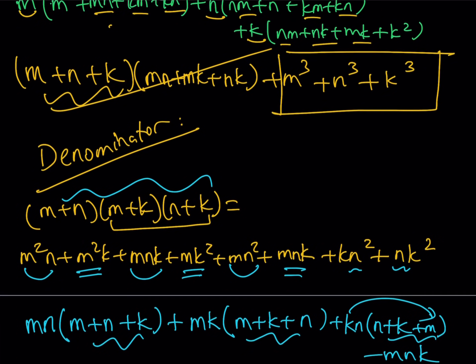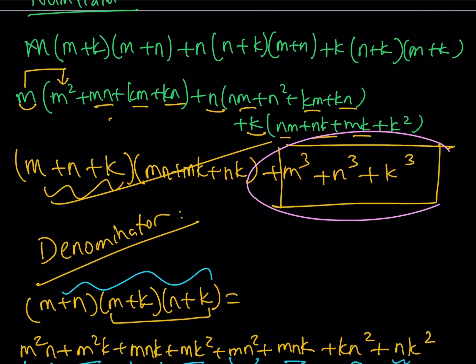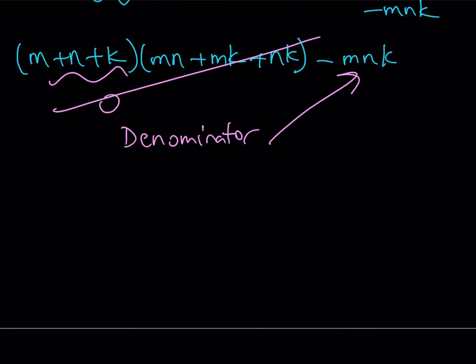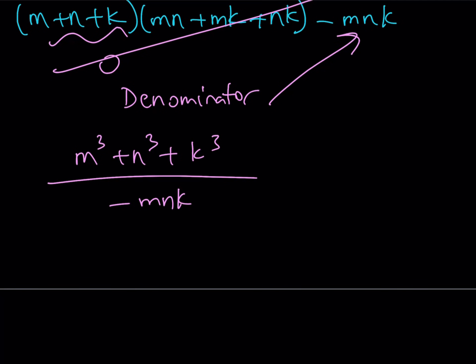So now I got the numerator. Remember, the numerator was this one, the sum of cubes. And then denominator is that one. So our expression is going to become then M cubed plus N cubed plus K cubed divided by negative MNK. Of course, we still need to simplify this. We're going to find a numerical value. But let's go ahead and look at our identity.